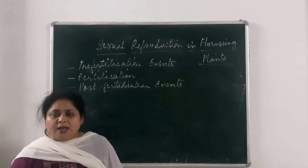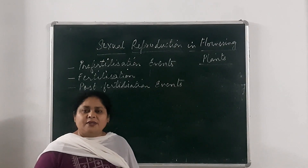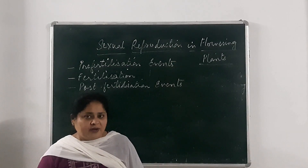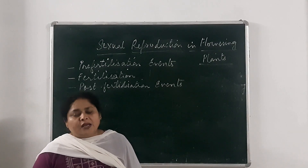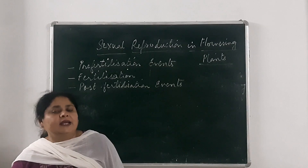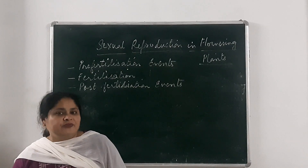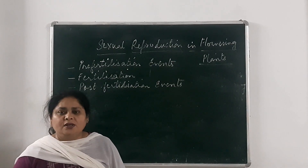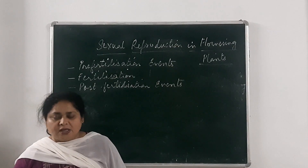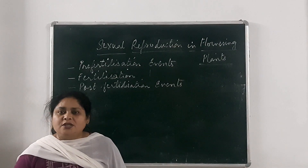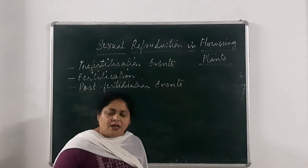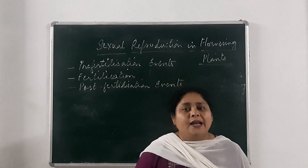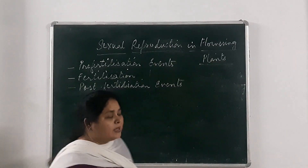Pollination is the proper process by which gametes are transferred in flowers. Pollination means the transfer of pollen grains from the anther of a flower to the stigma of a flower. Pollination is categorized into different types: self-pollination or cross-pollination. Self-pollination is also known as autogamy, and cross-pollination is also known as allogamy or xenogamy.